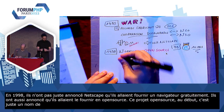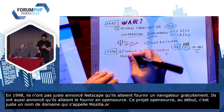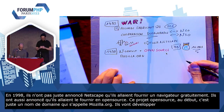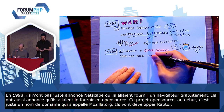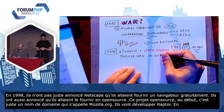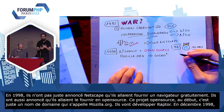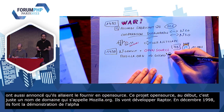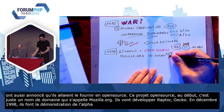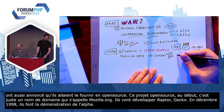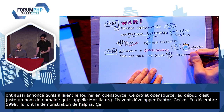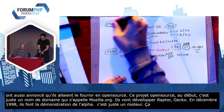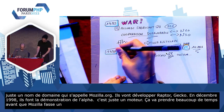Ils développent rapidement un nouveau moteur de rendu qu'ils vont appeler Raptor, puis NGLayout, et finalement Gecko. Et le 7 décembre 1998, ils font la démonstration de l'alpha à différents développeurs. Là, tout le monde se rend compte que ce moteur a des performances exceptionnelles, c'est génial, mais c'est juste un moteur. Ça ne fait pas un navigateur complet. Et ça va prendre beaucoup de temps pour que Mozilla arrive à faire un navigateur : 18 mois avant de faire un premier navigateur qui n'est pas folichon, Mozilla 1.0.